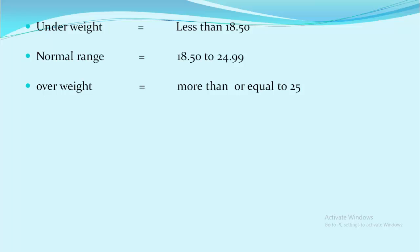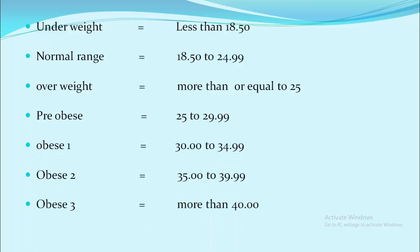If you are pre-obese, the range lies between 25 to 29.99. And there are different stages of obesity like obese 1, obese 2, obese 3. Obese 1 lies between 30 to 34.99, obese 2 lies between 35 to 39.99, and obese 3 is more than 40.